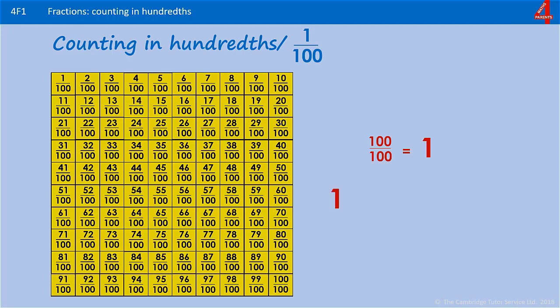One divided by a hundred is one hundredth, and we need a hundred lots of a hundredth to make the whole thing.